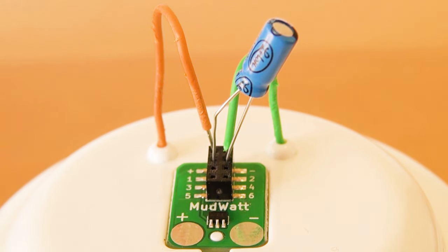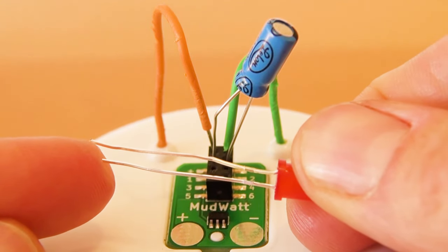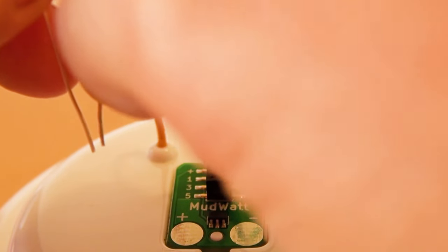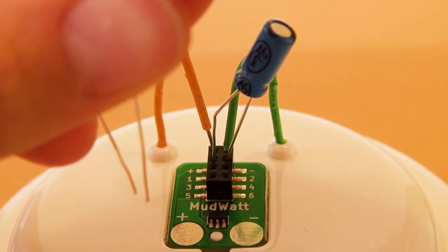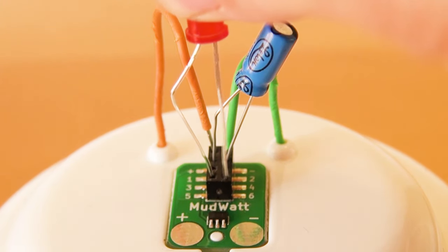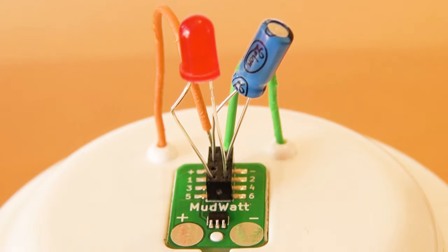Pins three and four remain empty. Next, take the red LED that also has a long lead and a short lead. Again, bend the long lead a little bit and insert the long leg of the LED into pin five and the short leg into pin six of the hacker board. Pins three and four remain empty. Now your microbial fuel cell is ready to blink.